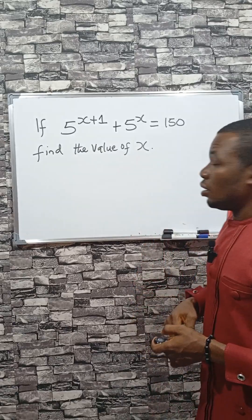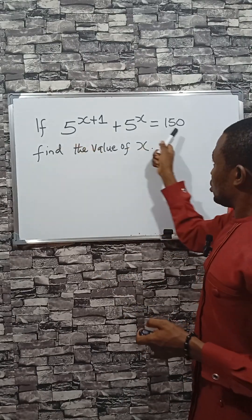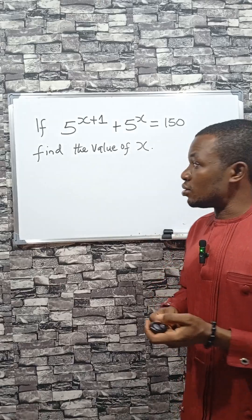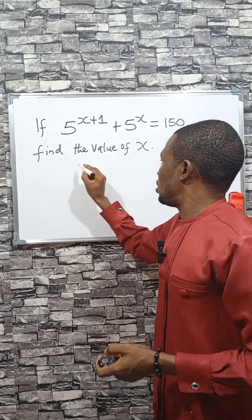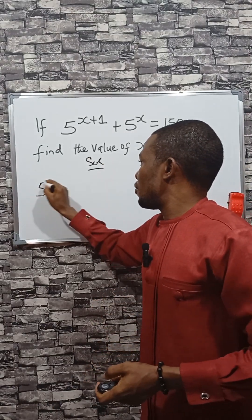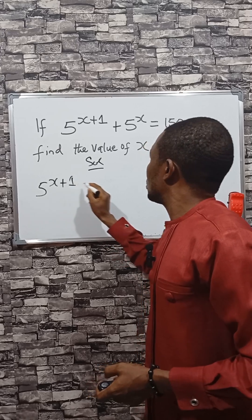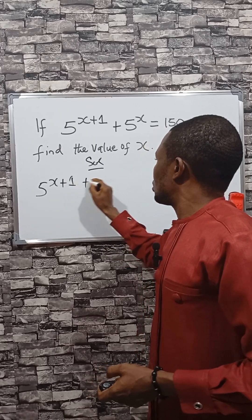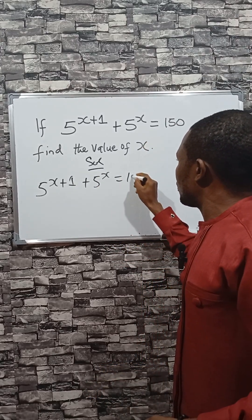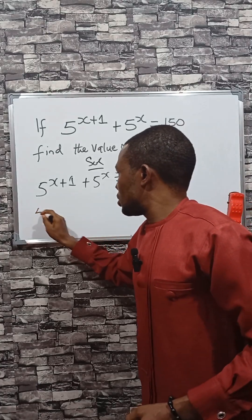Instead of applying logarithm base 10 to this equation, do this instead and have the answer in seconds. The problem is: 5 raised to the power x plus 1, plus 5 to the power x, equals 150. We can split this.